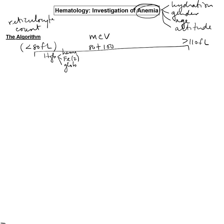What should we do to investigate a microcytic anemia with its decreased production of hemoglobin? Common things are common, so we start with iron studies, because iron deficiency is by far and away the most common cause of a microcytic anemia. That's going to be things like ferritin or the percent saturation, based on serum iron divided by total iron binding capacity. If this is decreased, then you can diagnose iron deficiency.